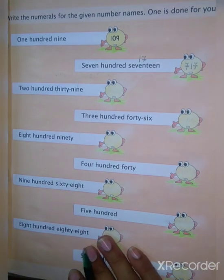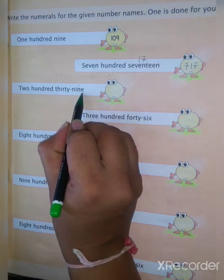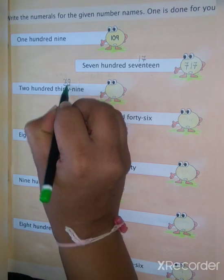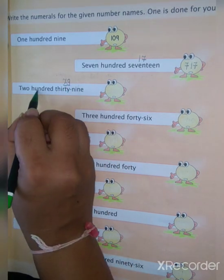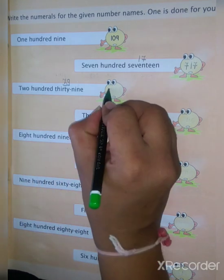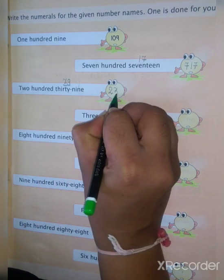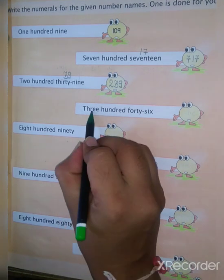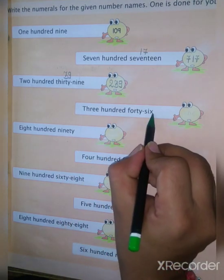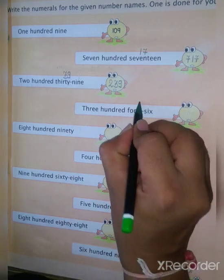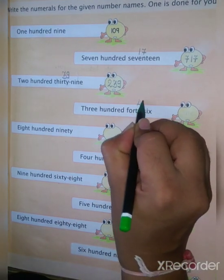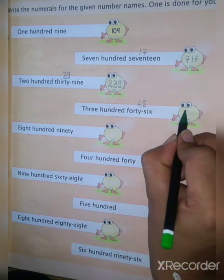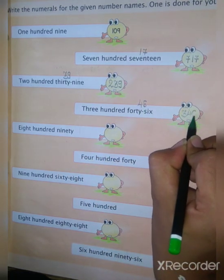Next value is 239: 39 means 3, 9 and in the hundreds position 2. So write here 239. Next value is 346: 46 means 4, 6 and 300. So 346.